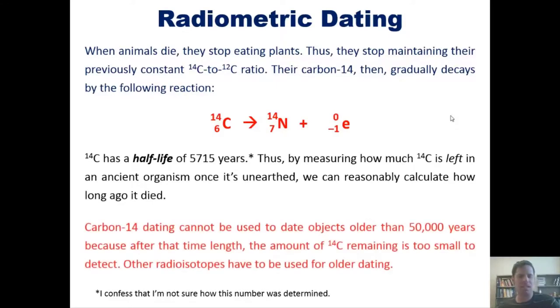Measuring how much carbon-14 is left in an ancient organism once it's unearthed can allow us to reasonably calculate how long ago it died. Carbon-14 dating cannot be used to date objects older than 50,000 years, however, because after that time length the amount of carbon-14 remaining is too small to detect. Other radioisotopes have to be used for older dating.